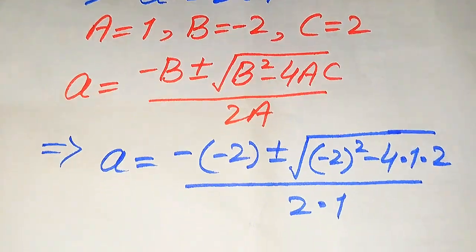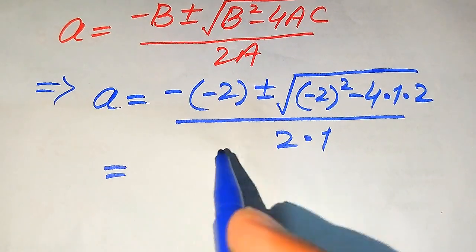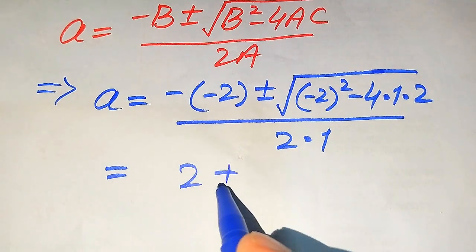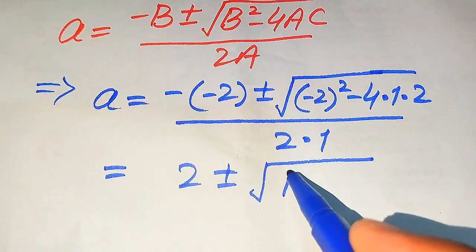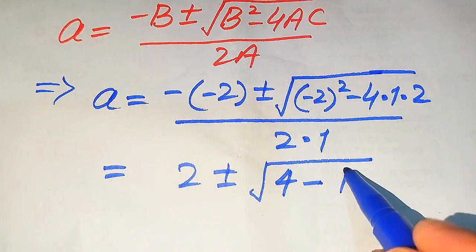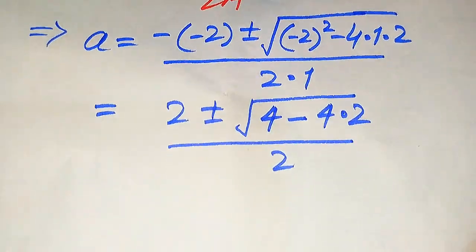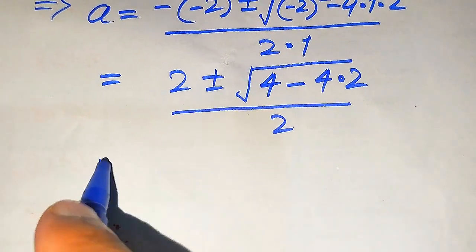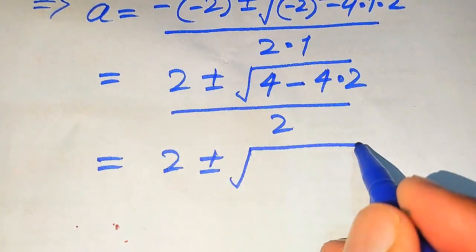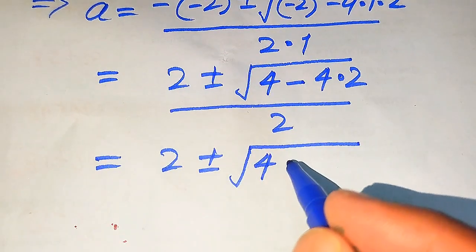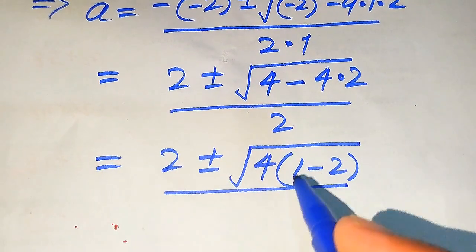Simplifying, minus B gives us 2, and (minus 2) squared gives 4. So under the square root we have 4 minus 4 times 2, divided by 2. We factor out 4 inside the square root to get 4 times (1 minus 2), divided by 2.